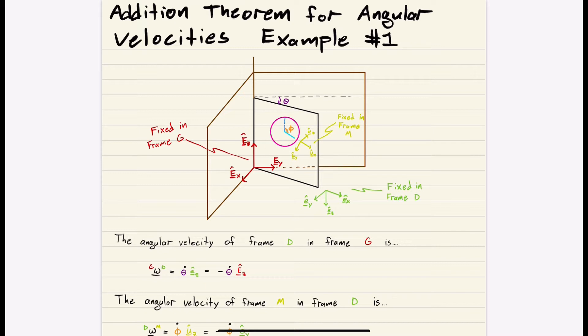And we have this red basis fixed in G, where EX points along this wall, EY points along that back wall, and then EZ points straight up.